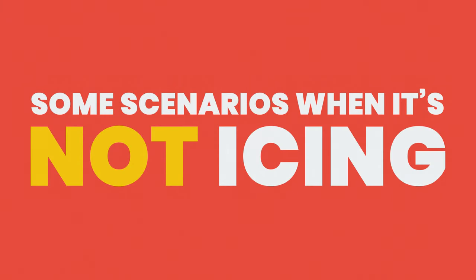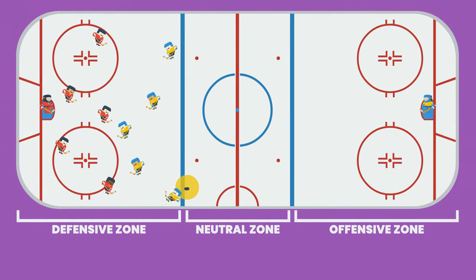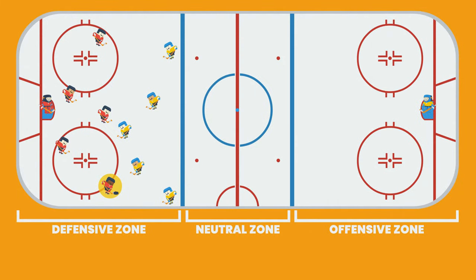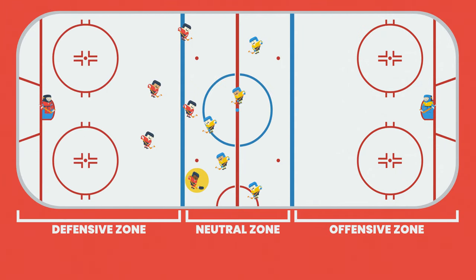Sometimes icing can get a little confusing. Here are some scenarios when it's not icing: if the puck hits an opposing player on the way back, even by accident, that's not icing. If your team is shorthanded — meaning you have less players on the ice than your opponent — you can dump the puck to the other side of the ice as much as you want. If the puck doesn't cross the opponent's goal line, it's not icing — it has to pass this line right here. If the referee thinks the opposing team could have reasonably gone to the puck before it passed the goal line, that's also not icing.